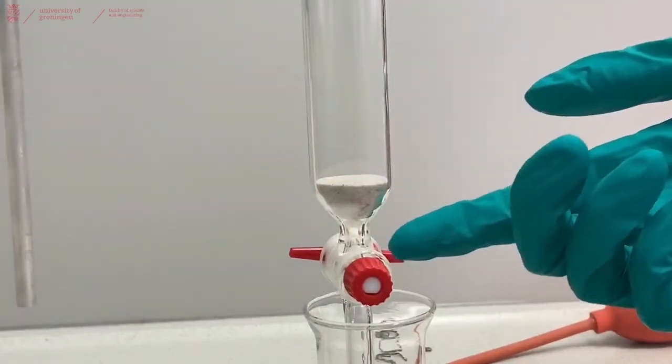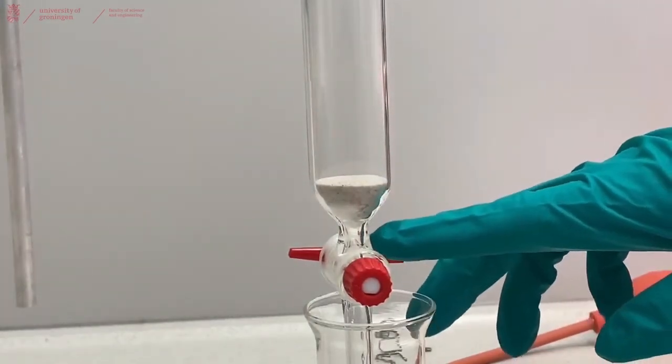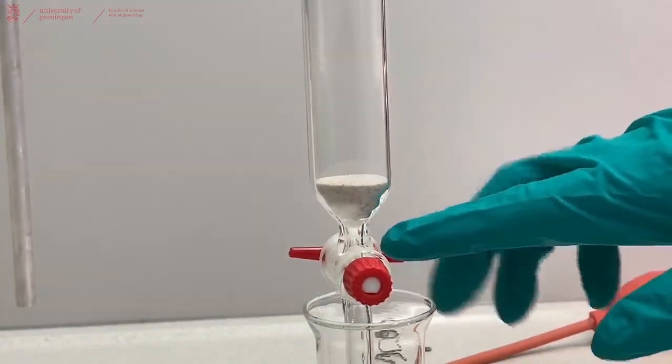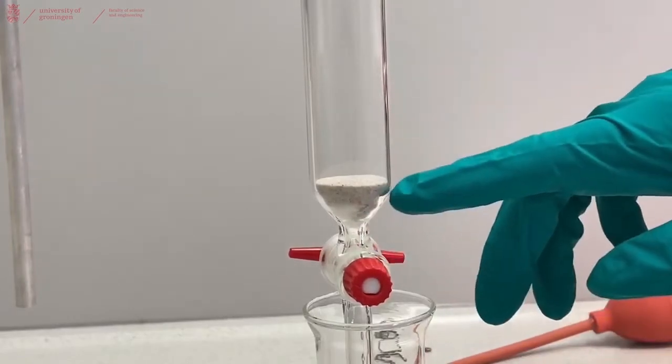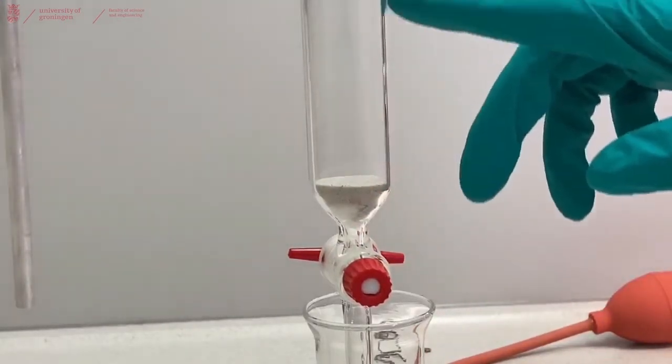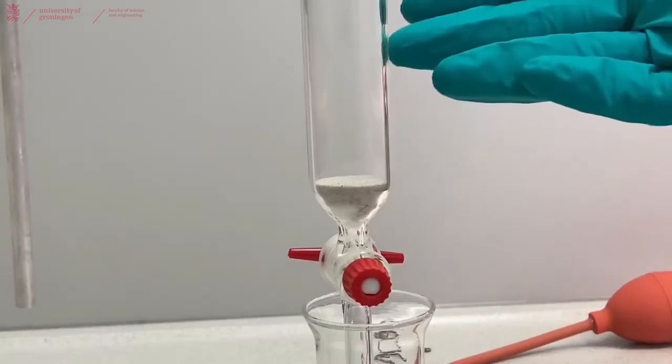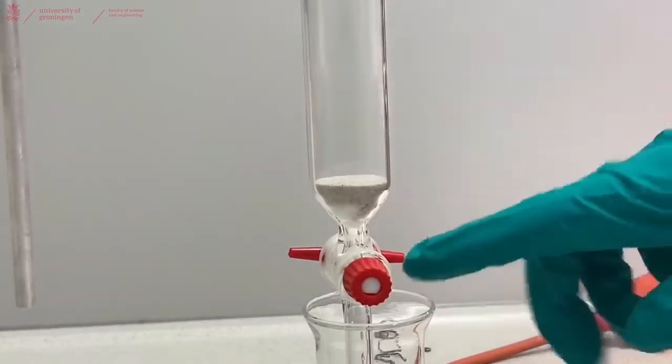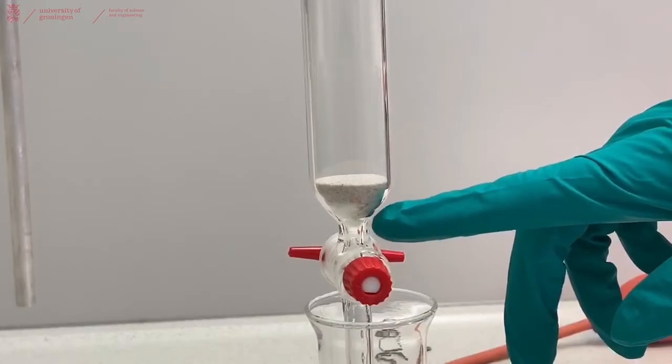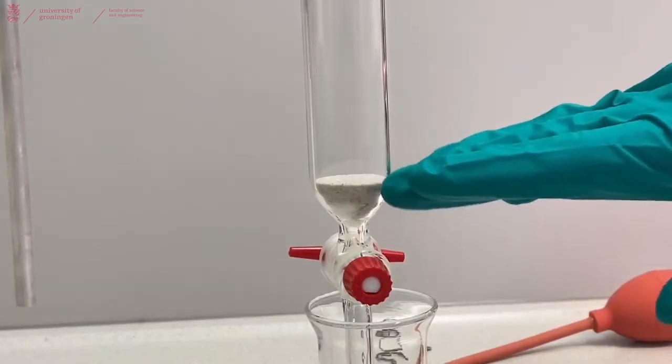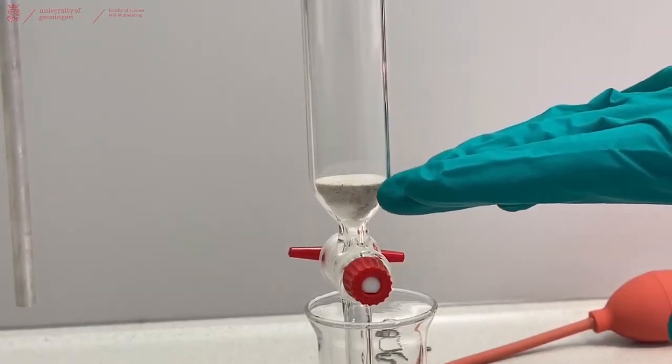At the bottom of the column, we placed a tiny bit of cotton pressed down with a long rod. And this is to prevent any of the sand or the silica that we're going to place in here, or any other solid phase that you're going to place in here, from leaking out the bottom of your column. And above the cotton, we have a layer of sand to have a nice equal bottom layer of your column.